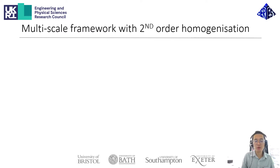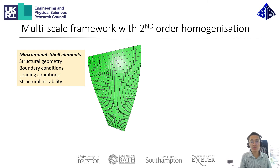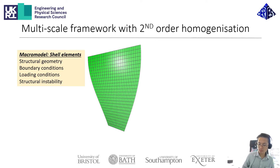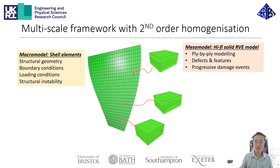In our multi-scale framework, this issue is treated as a two-scale problem. First, we model the structural length scale or the macro length scale using shell elements, and these shell elements will span the full thickness of the local laminate. At this length scale, we account for the structural geometry, the loading and boundary conditions, and also things like structural instability. The stress-strain response at every material point on the shell is obtained from a high-fidelity RVE analysis at the mesoscopic length scales. These RVE models have a detailed definition of defects and features such as wrinkles, ply drops, and cut plies.